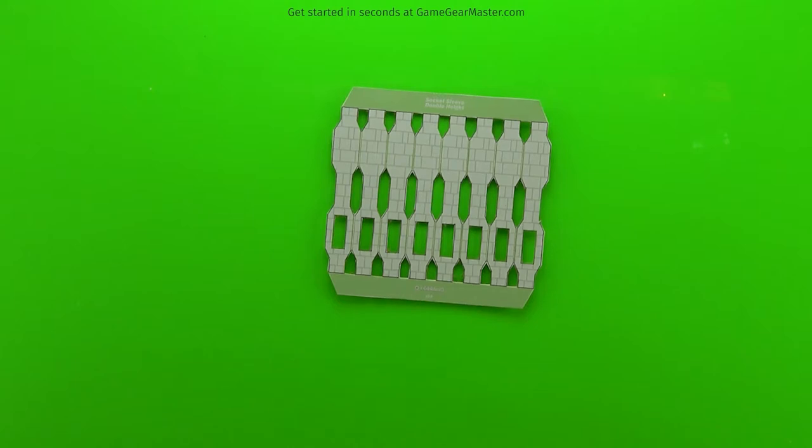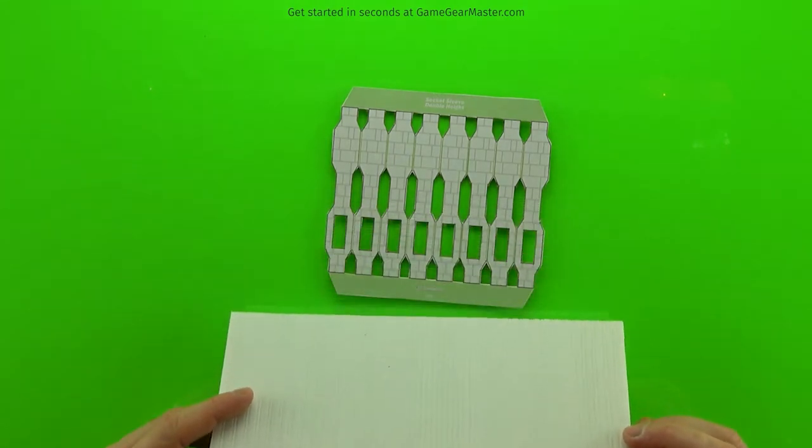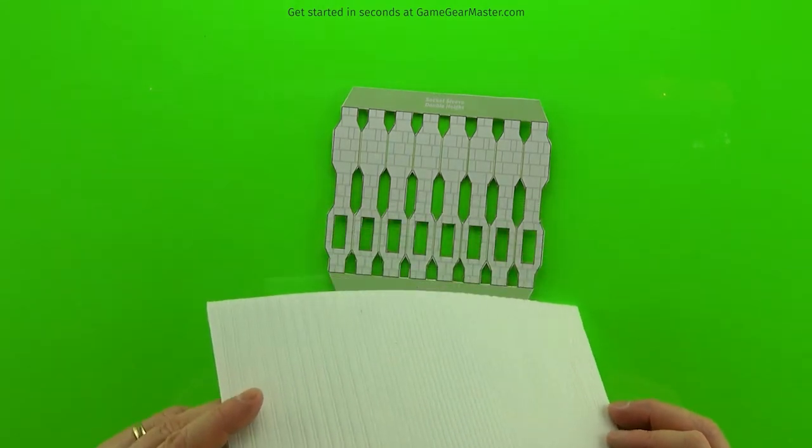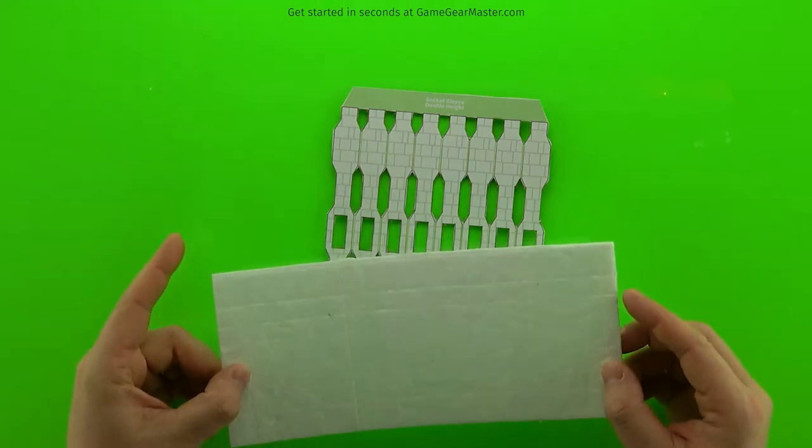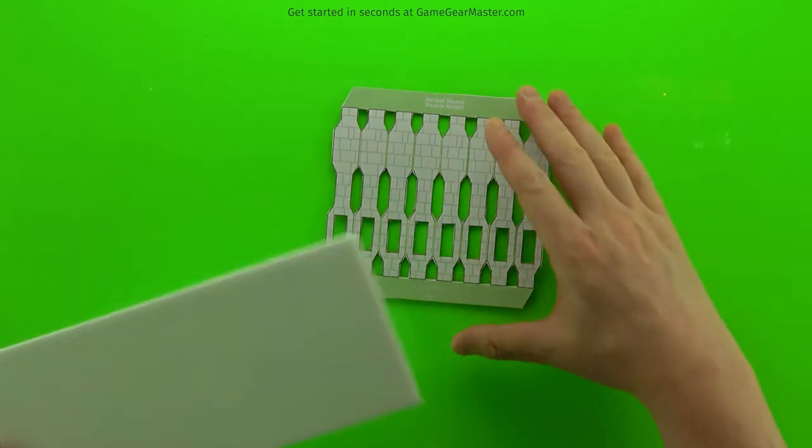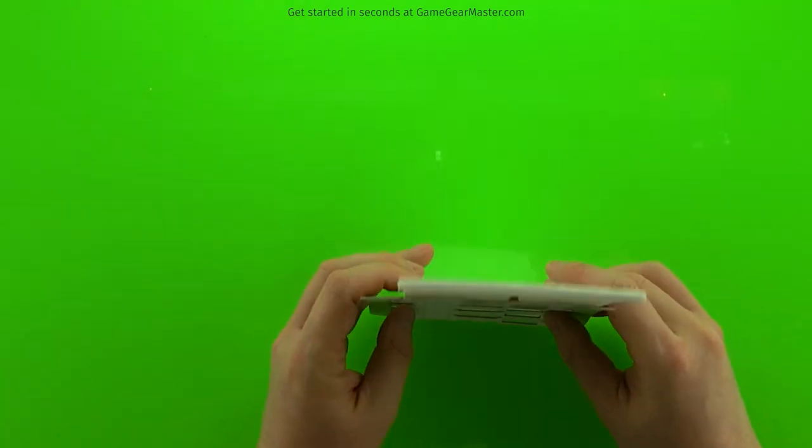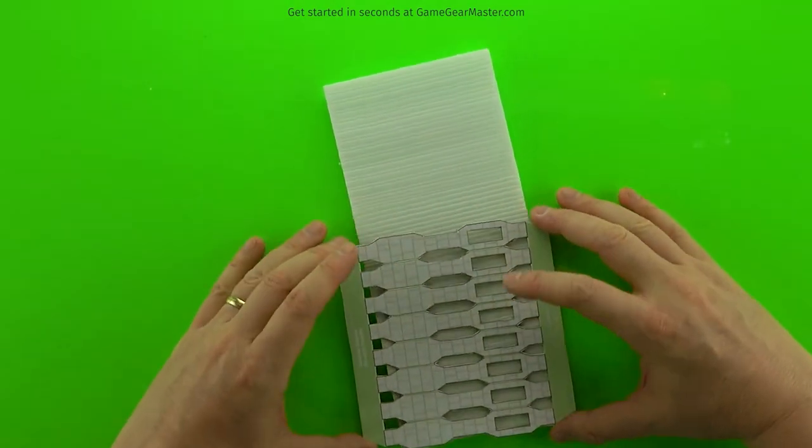So here we're going to make the sleeves. Now these go over sockets and add an added level of detail to your setups. You're going to want to use a piece of pre-textured foam. And if you use a piece of foam that has textures that are different on each side, you can get two different sleeve options from one sleeve.